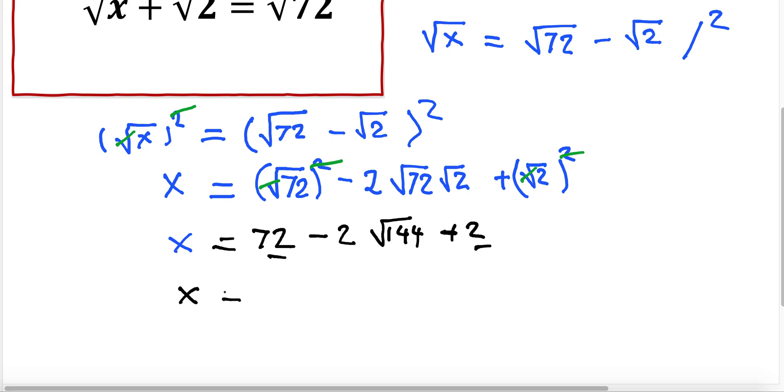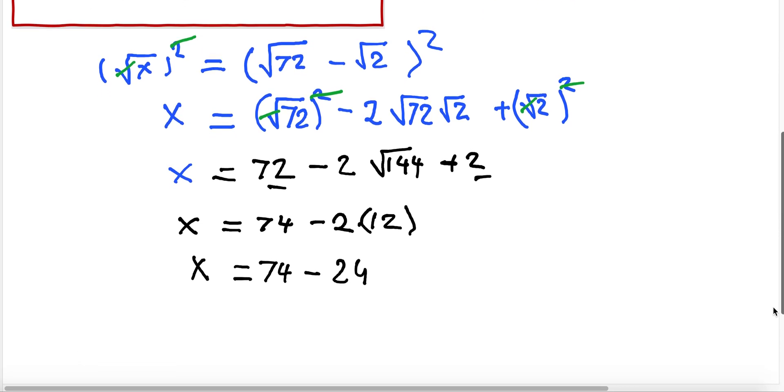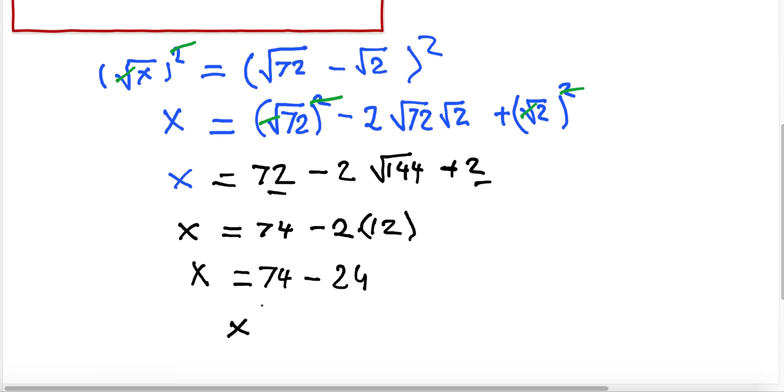x is going to be equal to 74, and here is minus 2 times the square root of 144, which is 12. So x is going to be equal to 74 minus 2 times 12, which is 24. If I'm subtracting everything here...